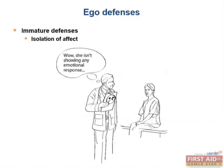Next we have isolation of affect, where individuals will separate their feelings from certain ideas. For example, a witness of a murder will describe the murder in graphic detail without showing any signs of an emotional response. The word affect is sometimes used in place of the word emotion, so this could also be understood as isolation of emotion.